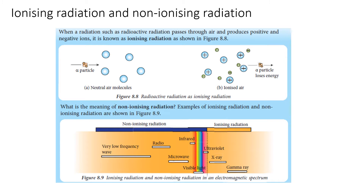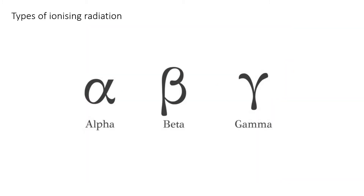While on the other side, we can see ionizing radiation, which is X-ray, gamma ray, and high-energy ultraviolet. For today's lesson, we are going to learn about the types of ionizing radiation. There are three types of ionizing radiation you need to know in this lesson: alpha, beta, and gamma.